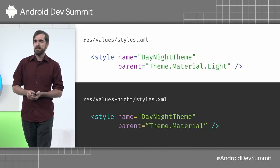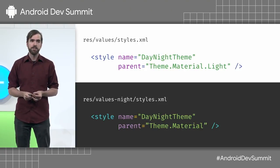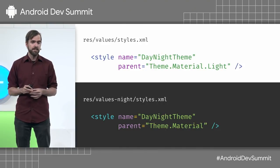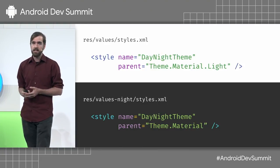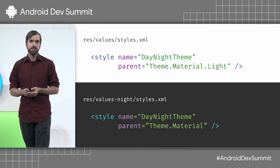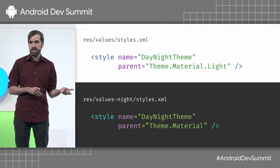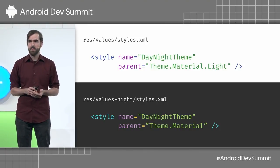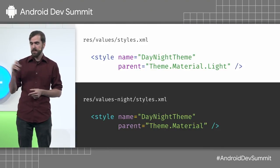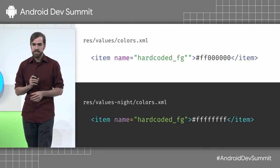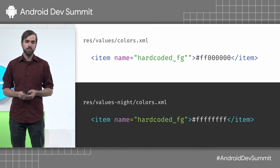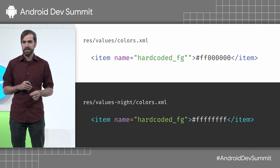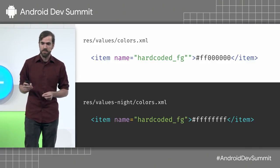Here's what the theme implementation can look like. If you want to switch your parent theme based on the night qualifier, you simply define the theme twice — once in values and once in values-night — giving each a different parent. When referenced under non-night mode, you'll pick up the light theme; under night mode, you'll pick up the dark theme. The same applies for colors — the same color defined two different ways, picking up black in non-night and white in night mode.